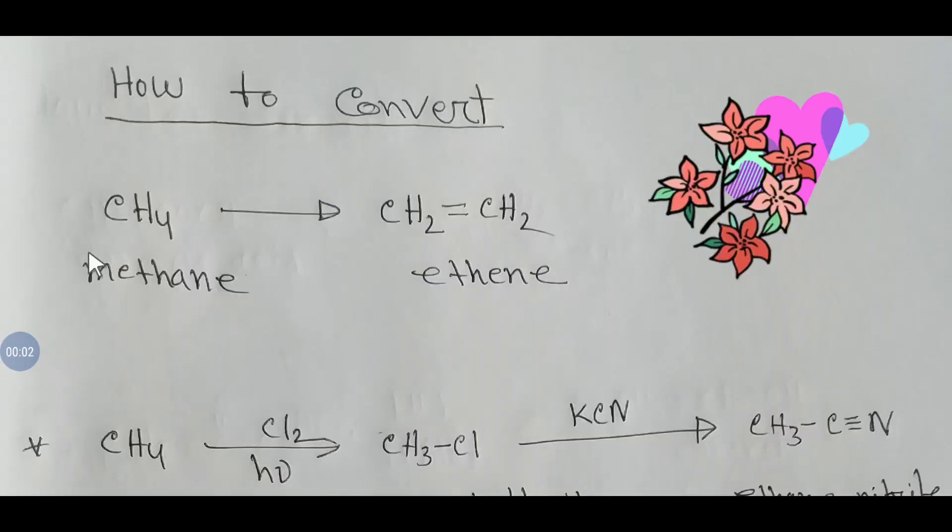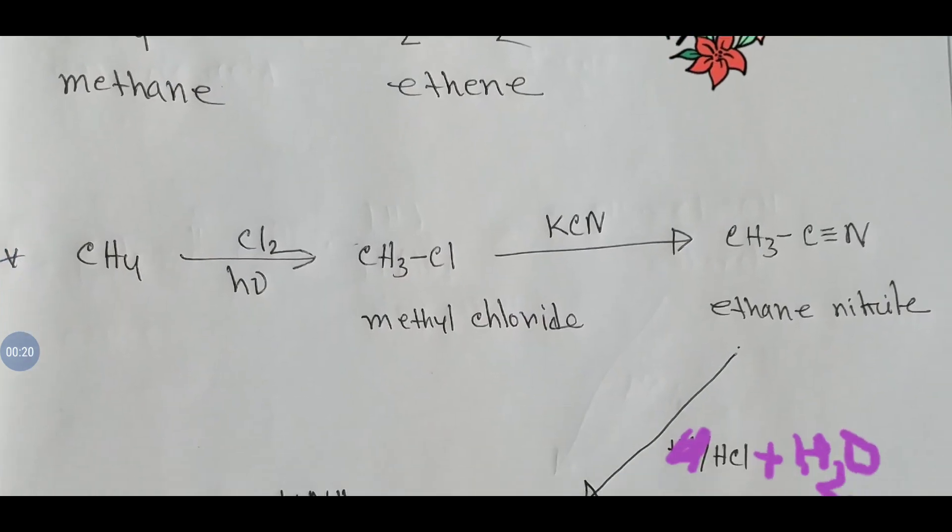Hello everyone. Today we are going to learn how to convert methane to ethane. To do so, we have to increase one carbon in the chain. As you see, ethane has two carbons and methane has one carbon. Let's get started.